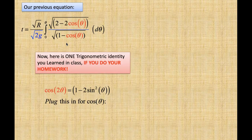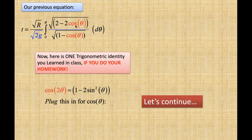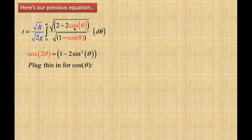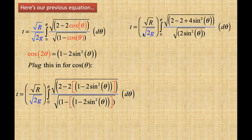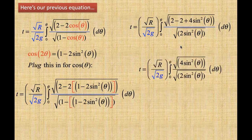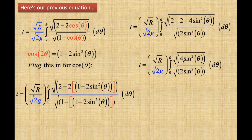Here's our previous equation. Now, here's a trigonometric identity: cosine 2-theta equals the quantity one minus two times sine squared theta. We're going to use this substitution — replacing cosine theta with cosine 2-theta equals one minus two sine squared theta — and plug that in for cosine. Multiplying through by two: two times one is two, and two plus two minus two is zero.